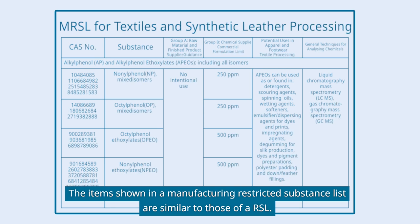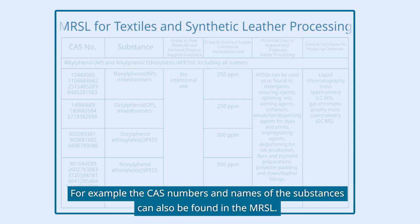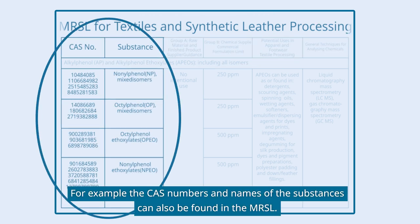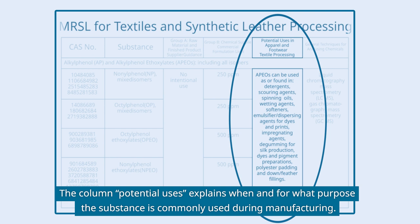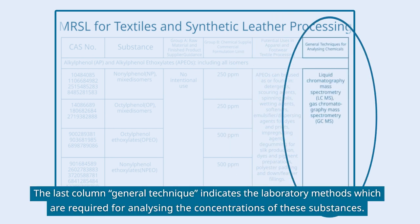The items shown in a Manufacturing Restricted Substance List are similar to those of an RSL. For example, the CAS numbers and names of the substances can also be found in the MRSL. The column Potential Uses explains when and for what purpose the substance is commonly used during manufacturing. The last column, General Technique, indicates the laboratory methods required for analyzing the concentrations of these substances.